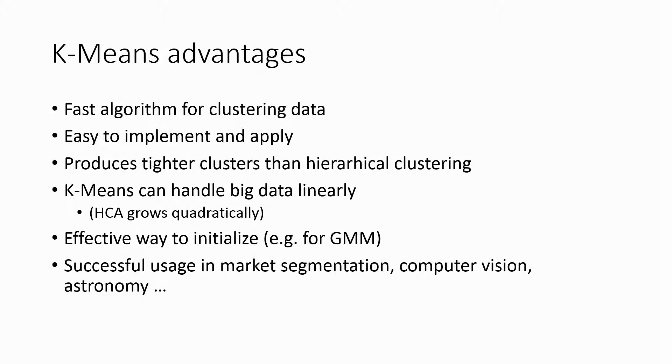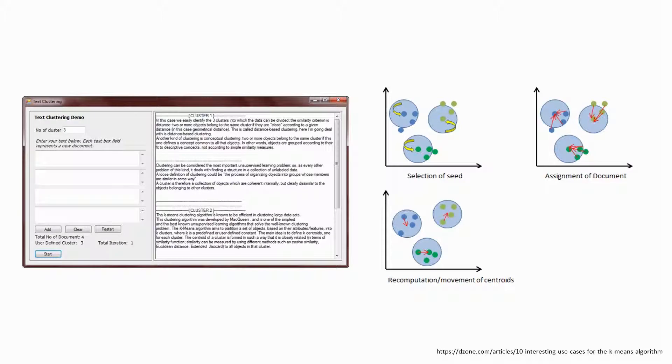The first example is document classification. We can use k-means to cluster documents in multiple categories based on text, topics and the contents of the document. This is a very standard classification problem and k-means is a highly suitable algorithm for this purpose.